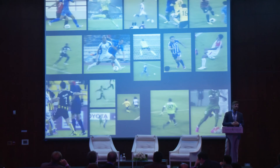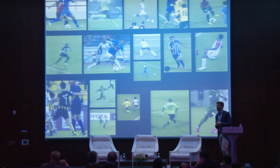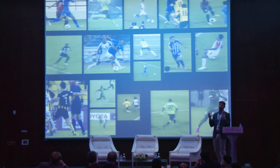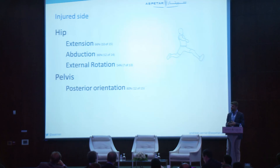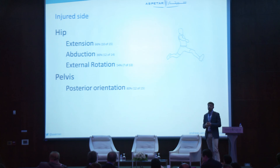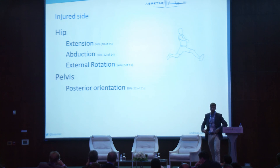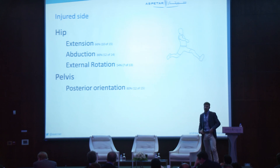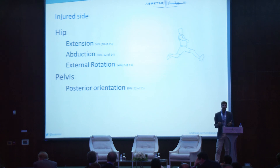These injuries often happen in innocuous situations. Looking at all injury types — kicking, change of direction, reaching — at the moment the player reports pain, we can see common hip positioning on the injured side: the player is often in hip extension, abduction, and external rotation, often with a posterior pelvic orientation. So the pelvis is back and the player is making the movement. Similar movement patterns appear across the different injury categories.